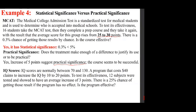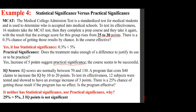IQ scores are normally between 70 and 130. A program that costs $40 claims to increase IQ by 10 to 20 points. To test its effectiveness, 12 subjects showed an average increase of only 3 points, and there is a 25% chance of getting those results if the program has no effect. Since 25% is greater than 5%, it does not have statistical significance, and most people would agree it is not practically significant either.